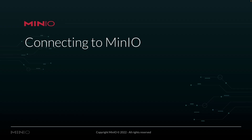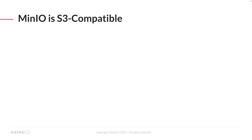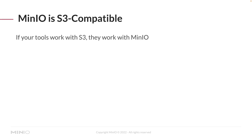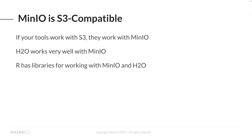Connecting all of this stuff up to MinIO — you're probably thinking you've got to learn all this connection stuff. Well, MinIO is S3-compatible, which means that if your tools work with S3, they work with MinIO. It's really just a drop-in replacement. In the examples you're going to see using R and H2O to connect to MinIO, I'm really just using the S3 libraries that are provided for those tools — I'm not using a specific MinIO library for this. H2O works very well with MinIO; it's very easy to connect your H2O system to load data and to write data. And R has libraries for working with MinIO and H2O because R has libraries for working with S3 and H2O. So when we start building all this stuff out, it's really a very basic process to get everything connected.